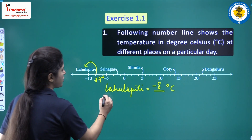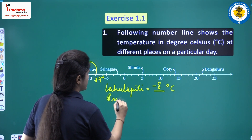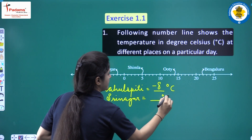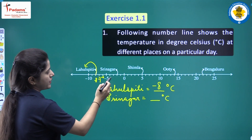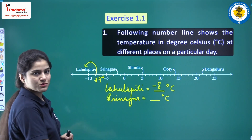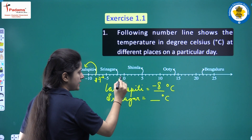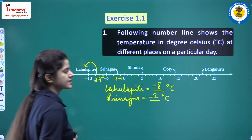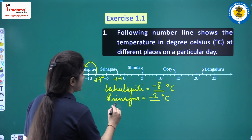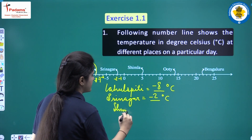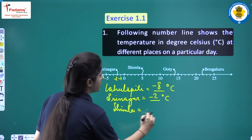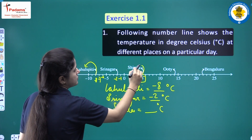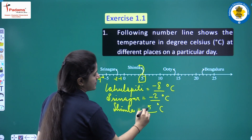Next is the temperature of Srinagar. Srinagar's temperature is 0, minus 1, and minus 2 — that is minus 2 degrees Celsius. Next, Shimla's temperature is clearly 5 degrees Celsius.